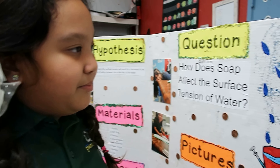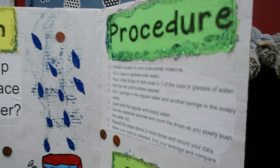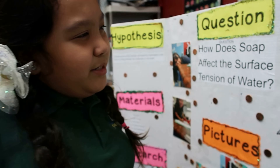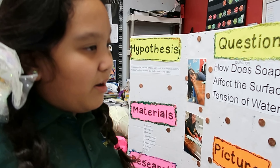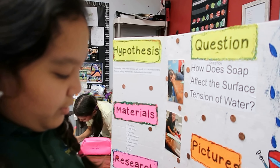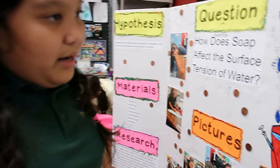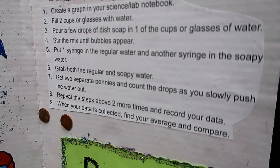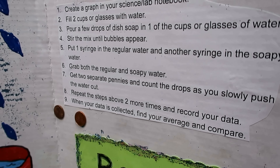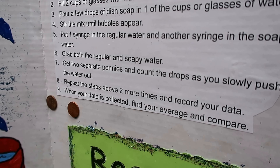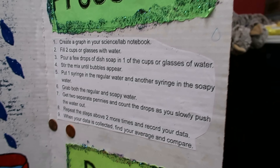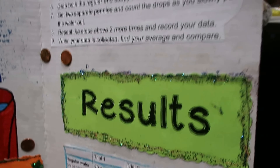Surface tension results in a force of cohesion between the molecules in the water. Water is made of tiny molecules, and these molecules pull on each other and exert a force. This means that all the molecules at the surface are helping hold together the droplet of water, and this is called surface tension.